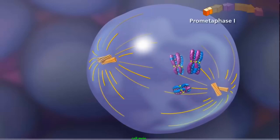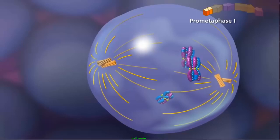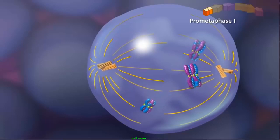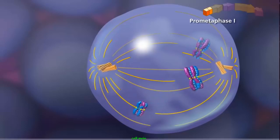In prometaphase I, with the paired centrioles in place, the meiotic spindle is fully formed. The sister chromatids attach to the spindle fibers by their kinetochores.